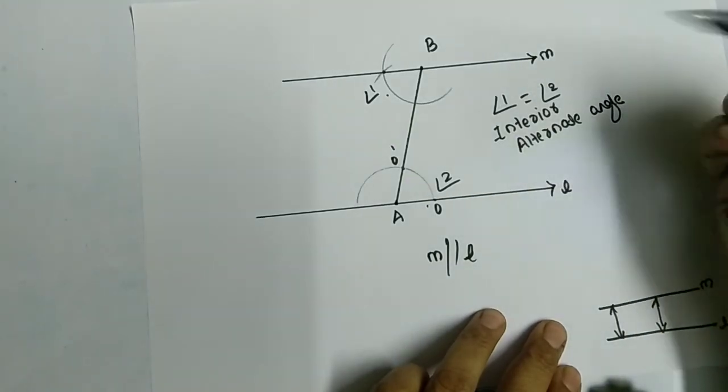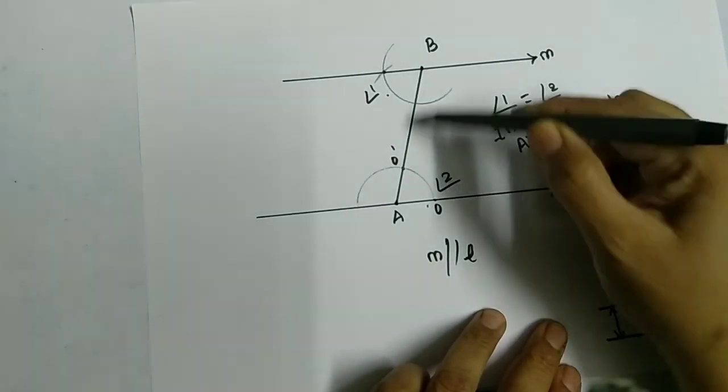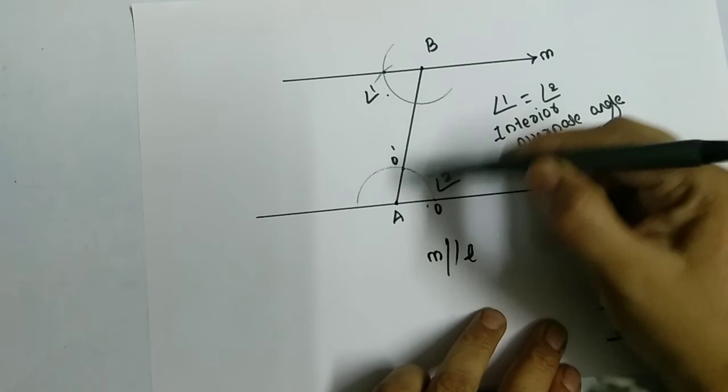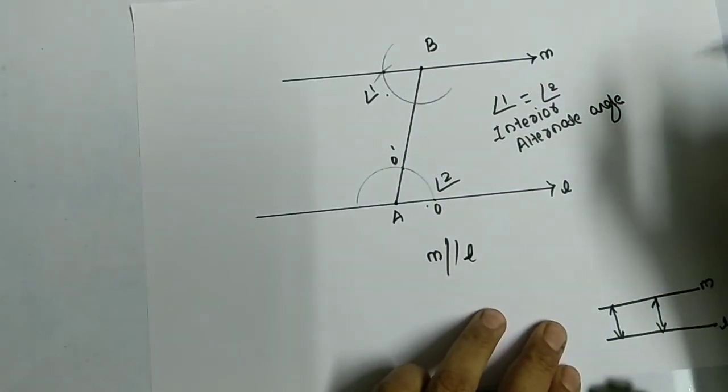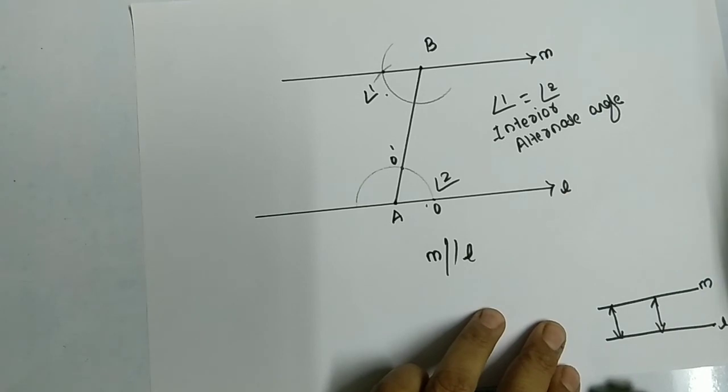Similarly, when you have two parallel lines and a transversal, this AB is nothing but a transversal. So angle 1 and angle 2 will be equal to each other, and they are called interior alternate angles. Thanks for watching.